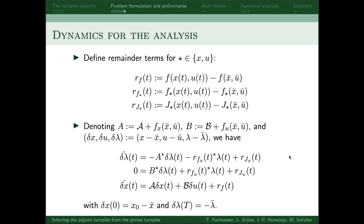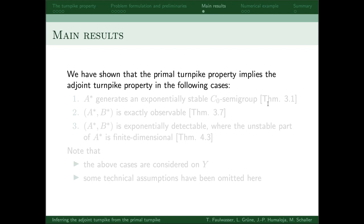These remainder terms play less of an important role, since the primal turnpike x and u approach x bar and u bar, and hence the remainder terms approach zero. Of course, this wouldn't be the case without f and j being sufficiently smooth. So those error dynamics are the basis of our analysis, and we've obtained the following results.